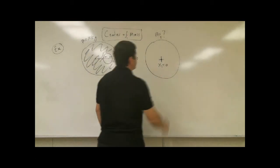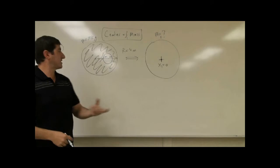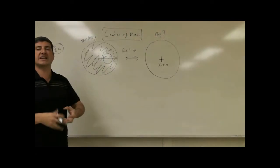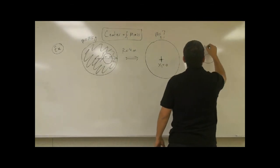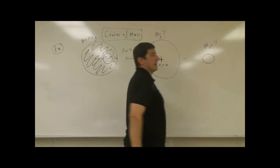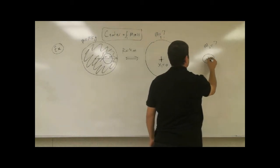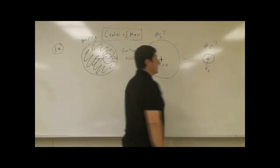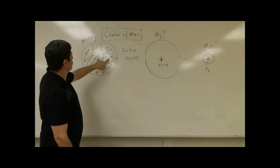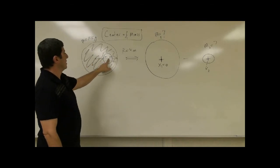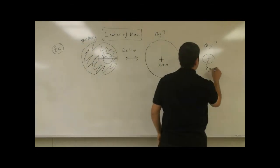X1 is going to be zero. From that, we're going to subtract the center of mass of the cavity, treating it as a missing mass. The cavity will have a certain mass M2, which we have to calculate. Its center of mass X2 will be at its center — positioned 1 meter and 1 meter from the disc's center, so X2 is equal to 2 meters.